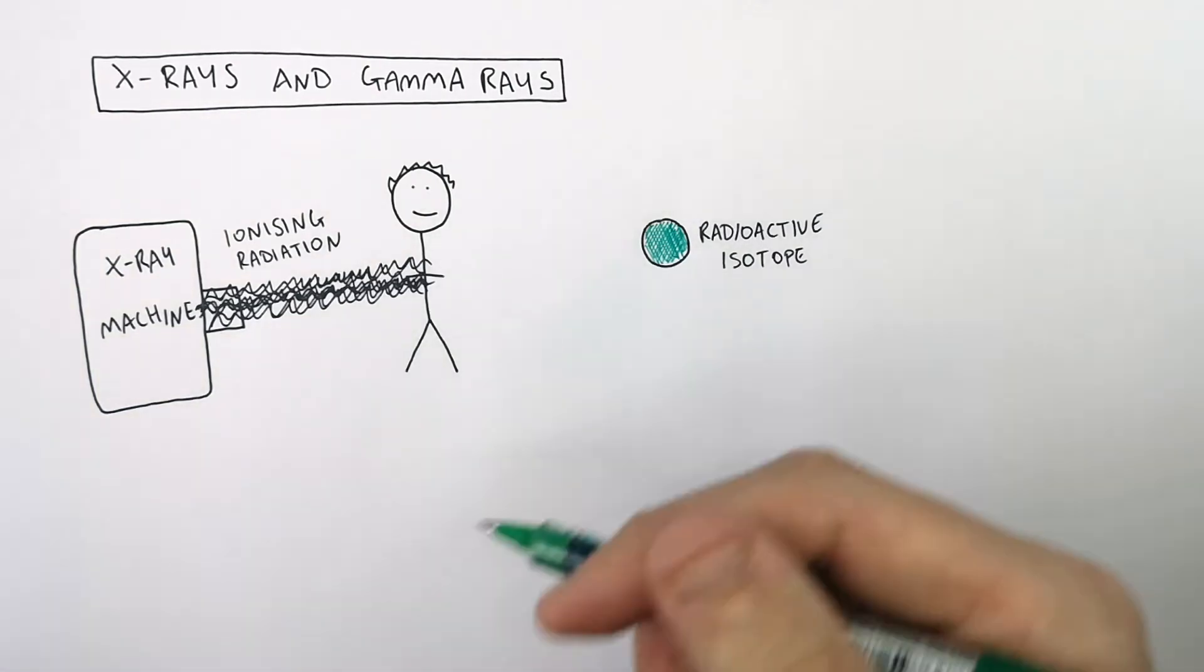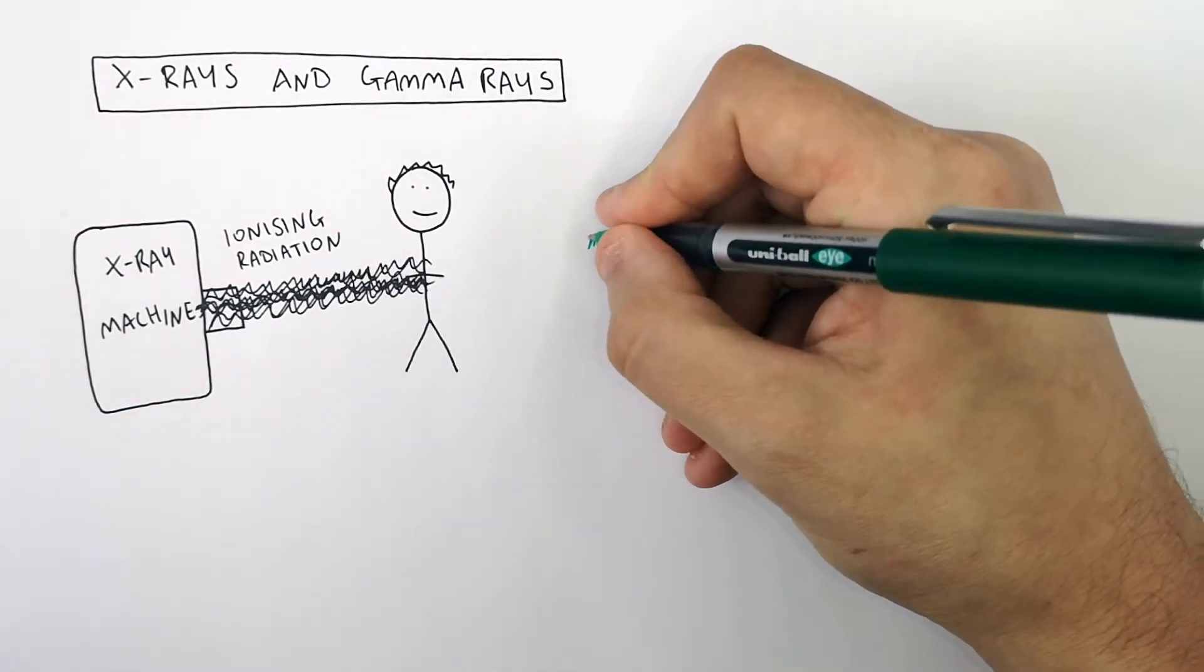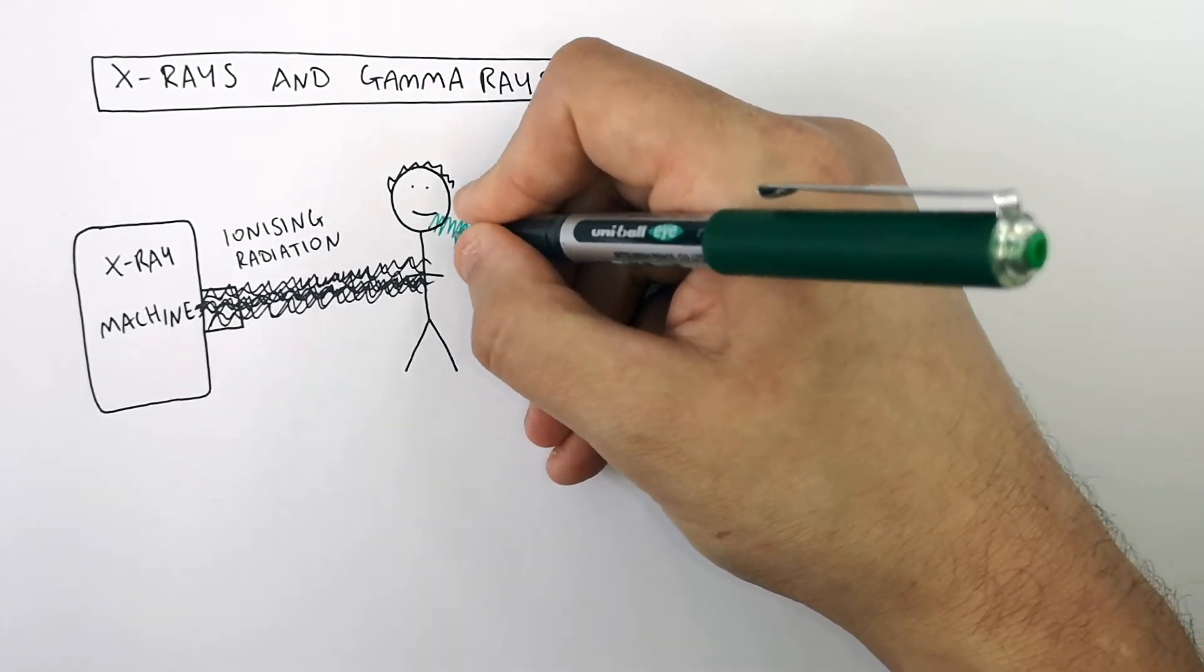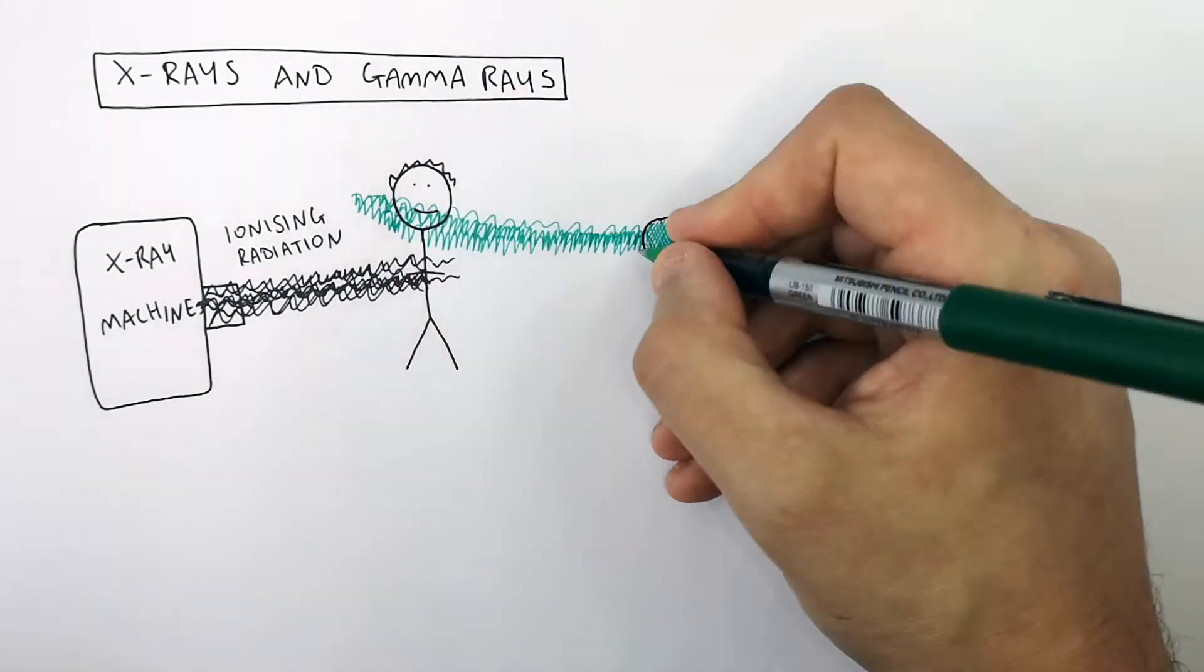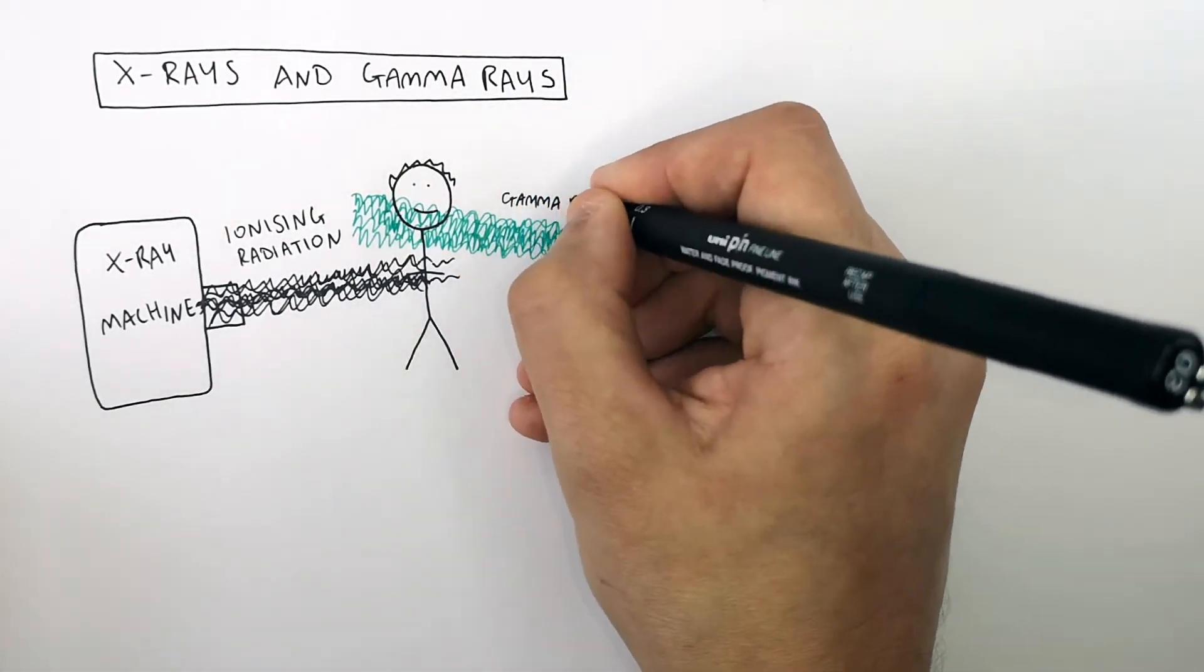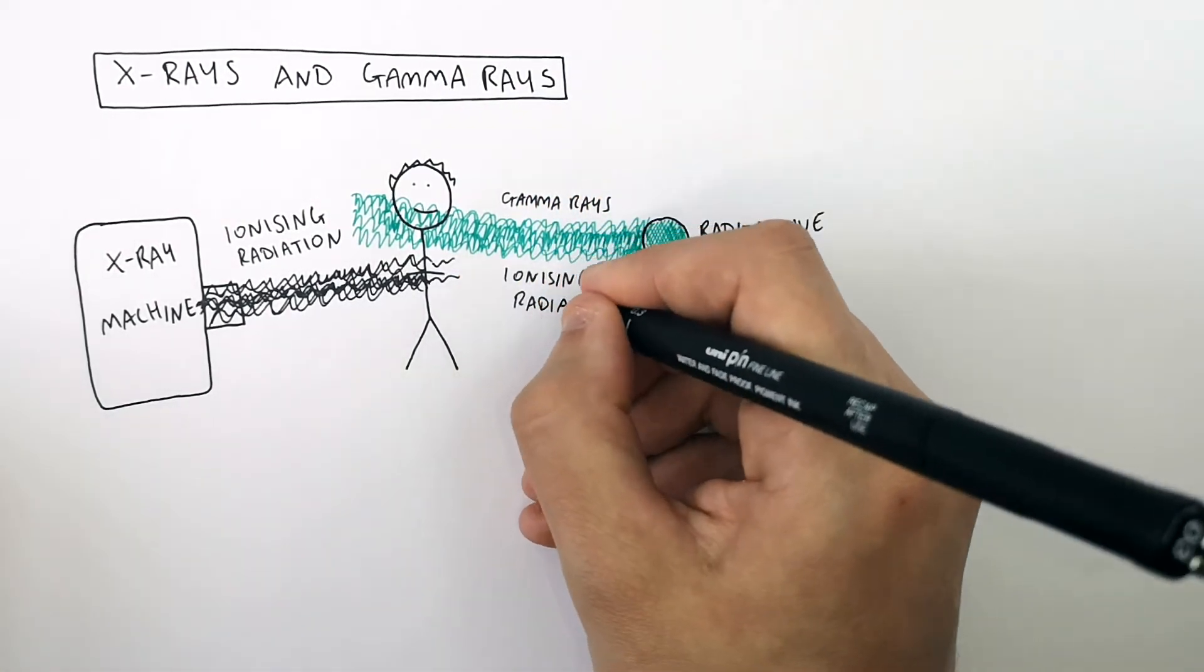Gamma rays are also ionizing. So if you are exposed to gamma radiation in a hospital, maybe for radiotherapy for example, which kills cancer cells, that is going to be slightly dangerous because gamma rays are also ionizing radiation.